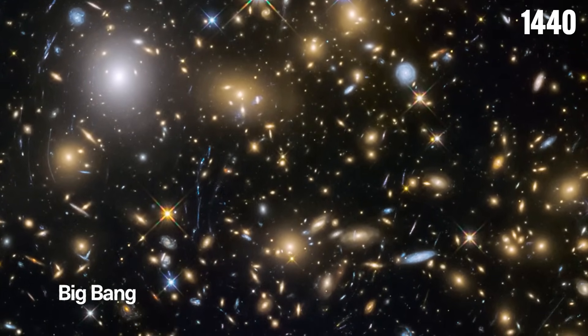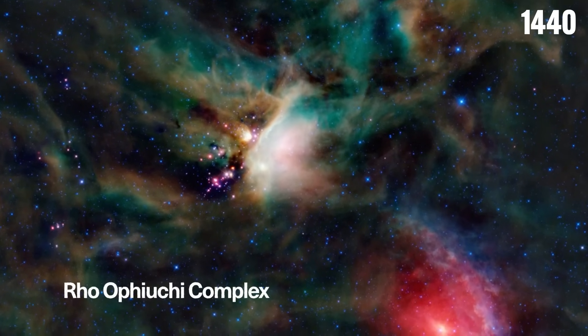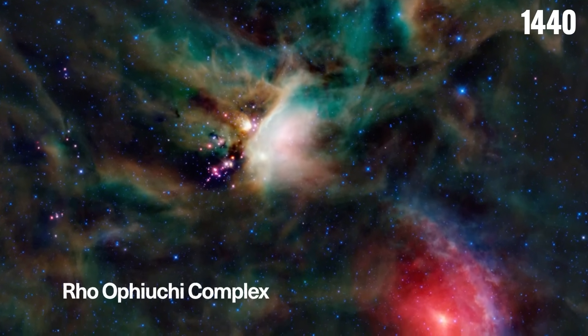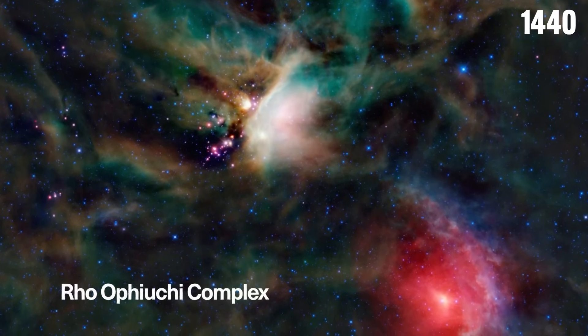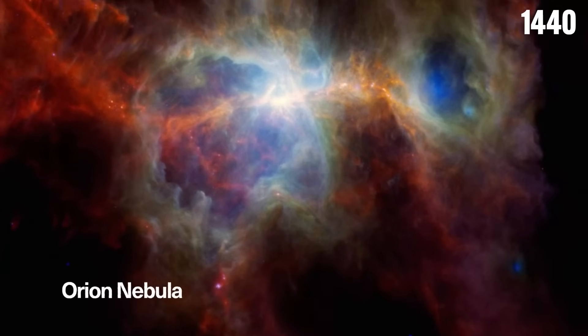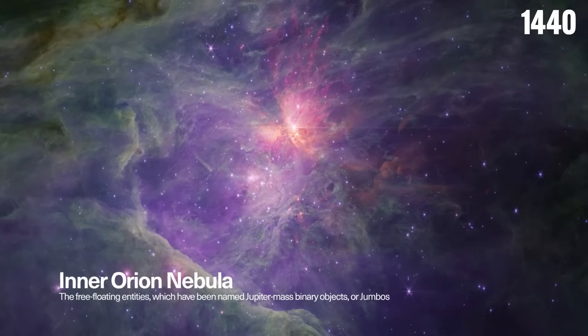It also pierced through cosmic dust in the nearby Ro-Afayuki complex, capturing fascinating images of 50 young stars. Additionally, it observed nearly 50 pairs of Jupiter-sized planets orbiting each other within the Orion Nebula, a new category of celestial objects now called jumbos.